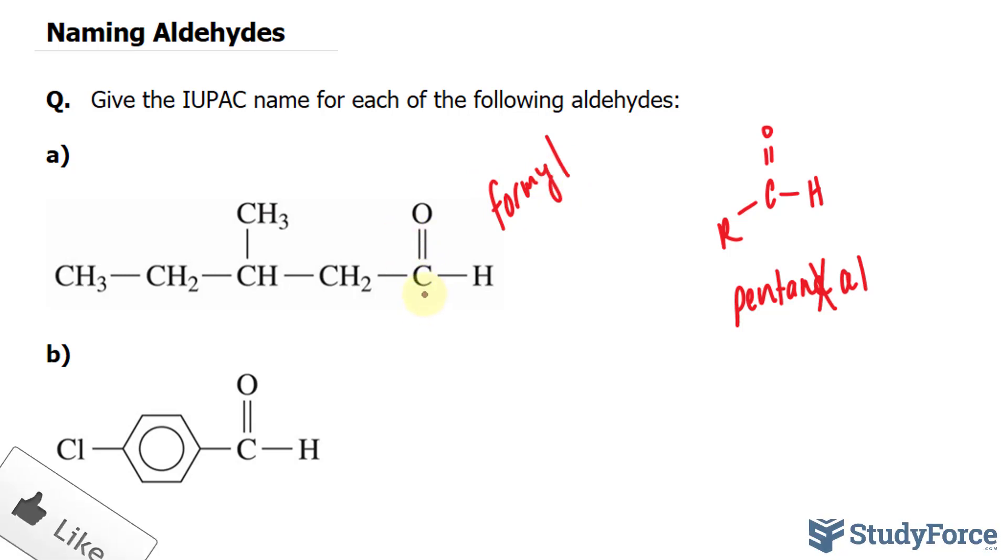Now obviously it's this carbon so I'm going to call this 1, 2, 3, 4, and 5. In addition, we have this methyl group that is on carbon 3. So we'll write down 3-methylpentanal.